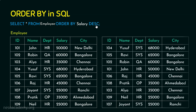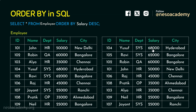The output will be in descending order of salary. The highest value in the salary column is 68,000, so the row containing 68,000 appears first, followed by the second highest salary, and continuing down until the minimum salary appears in the last row.